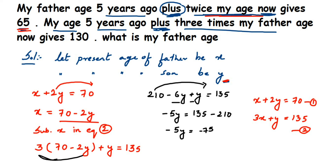Subtracting: minus 5Y equals minus 75. Transposing minus 5 to the other side — since it's in multiplication it comes to division — so Y equals minus 75 divided by minus 5. The negatives cancel, and 75 divided by 5 is 15. So Y equals 15, meaning the son's age is 15.